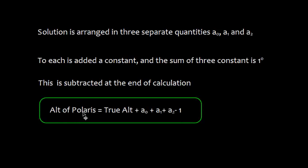We can say the altitude of Polaris, that is true altitude plus A0 plus A1 plus A2 minus 1. And this altitude of Polaris is equal to the observer's latitude.